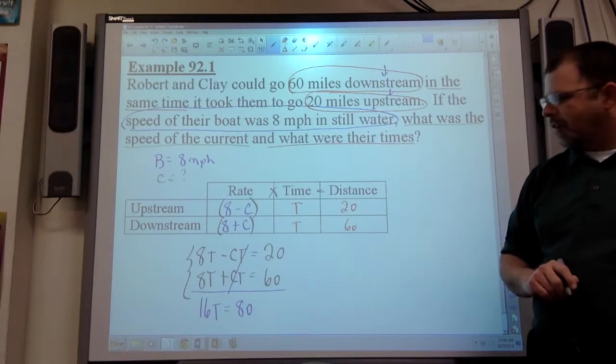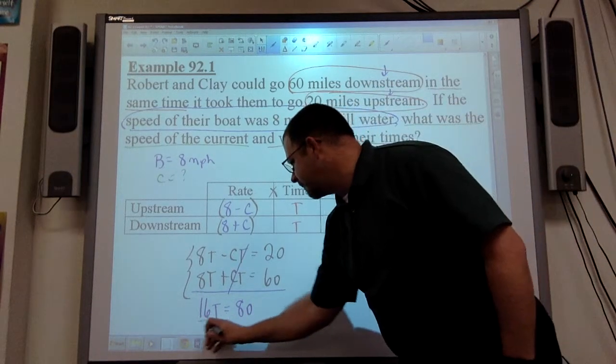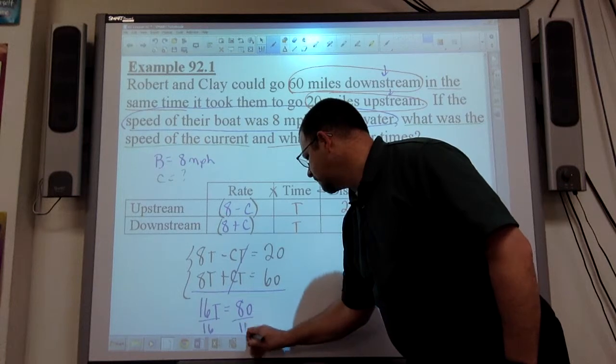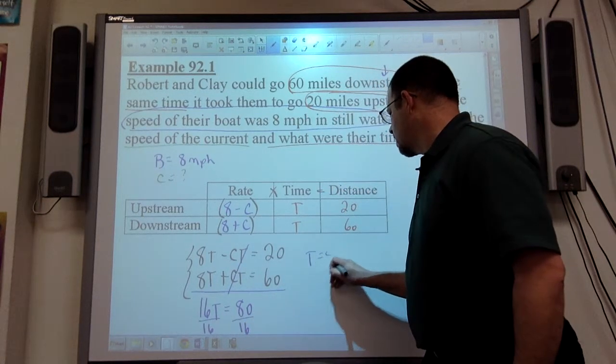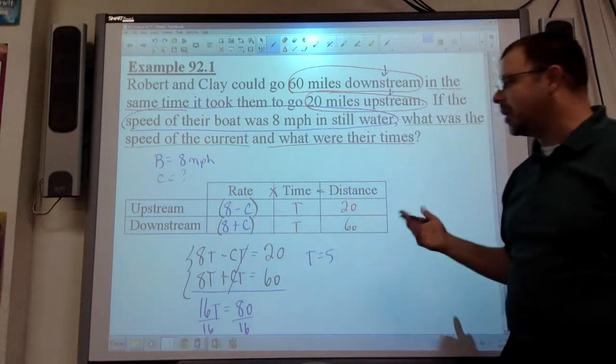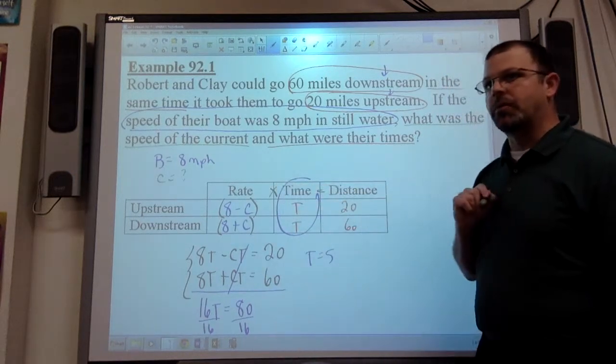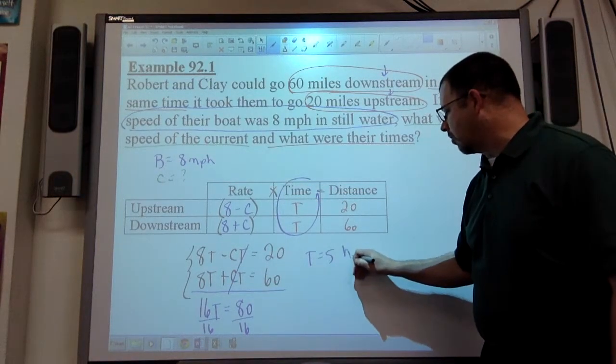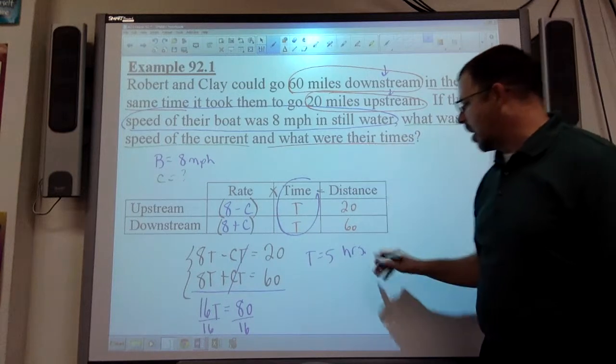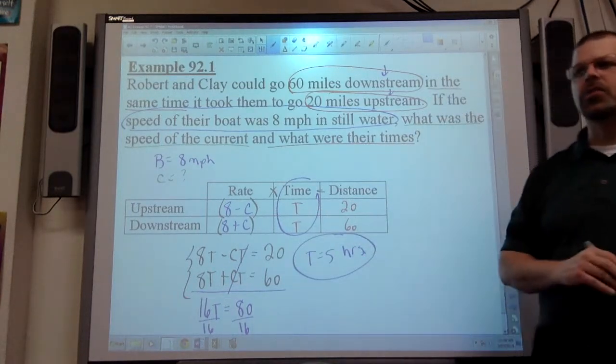If I divide both sides by 16, that's going to get me T equals 5. If I go back to my chart to interpret what T means, T is the time of both upstream and downstream, right? So 5 hours. It says, what were their times? Got that answer.